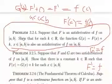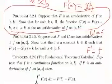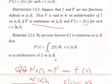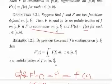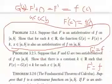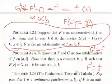Let's do this problem. Suppose F is an antiderivative of lowercase f on the closed interval [a, b]. That means uppercase F should be continuous on that closed interval, and the derivative of uppercase F equals lowercase f over the open interval.